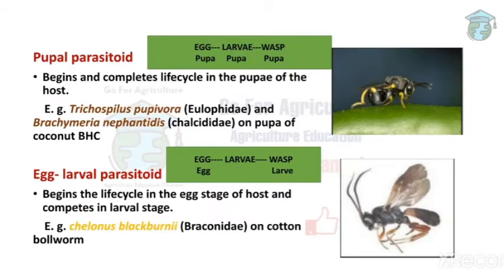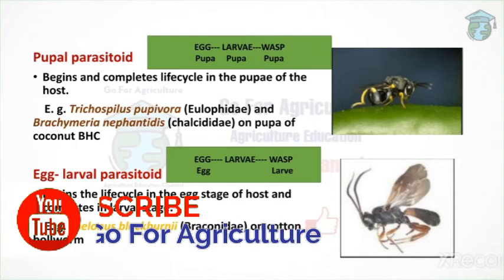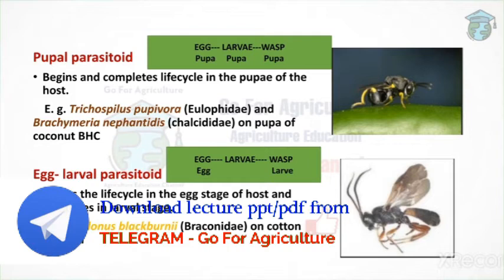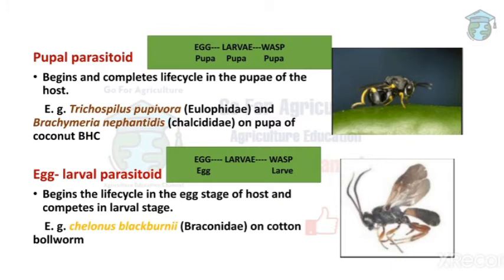Next is pupal parasitoid — the wasp lays eggs in the pupa of the host, and all three developmental stages complete within the pupa. The adult wasp finally emerges from the pupa. Examples: Trichospilus pupivora and Brachymeria nephantidis on the pupa of coconut bhc (black-headed caterpillar).